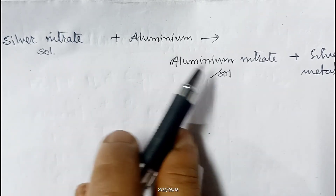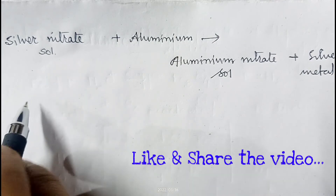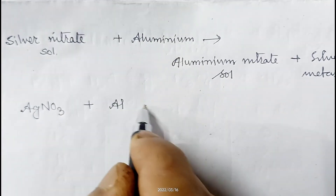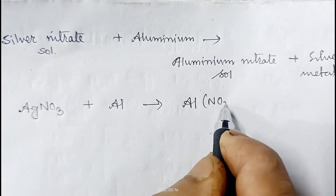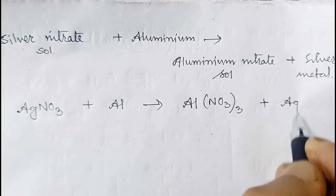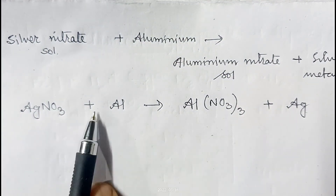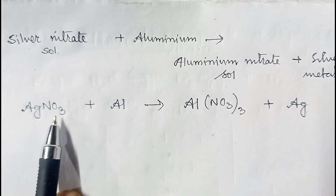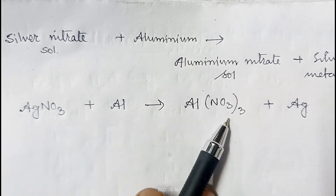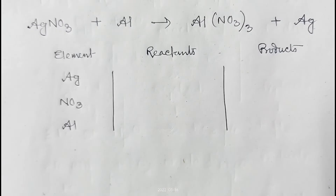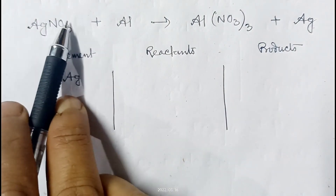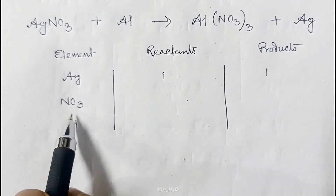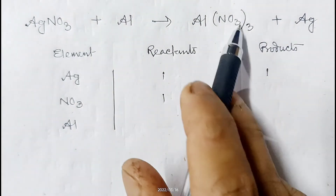Let's discuss another equation. Silver nitrate solution reacts with aluminium metal to form aluminium nitrate solution and silver metal. The reaction is: AgNO₃ + Al → Al(NO₃)₃ + Ag. Counting atoms on both sides: silver is one on each side, aluminium is one on each side, but the NO₃ radical is one on the reactant side and three on the product side — it is not balanced.